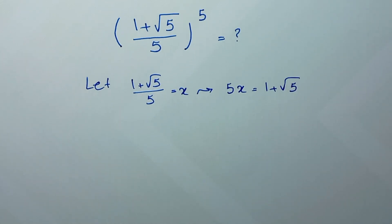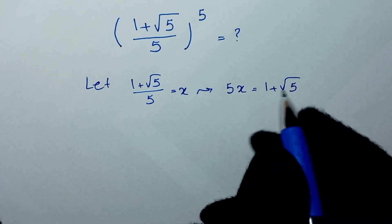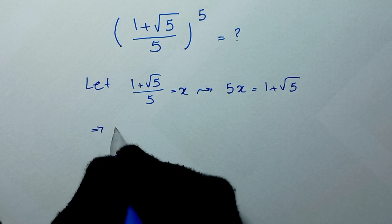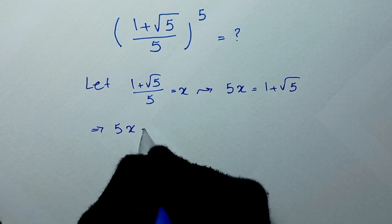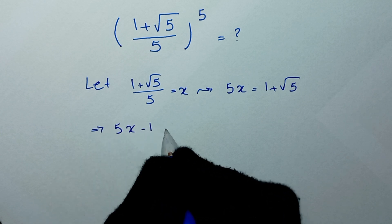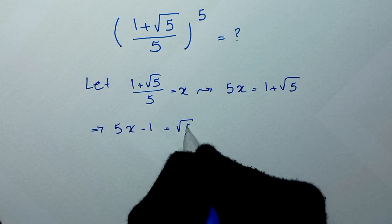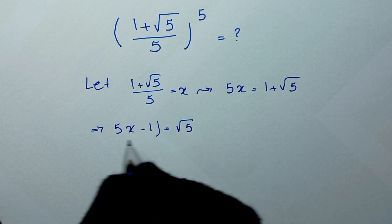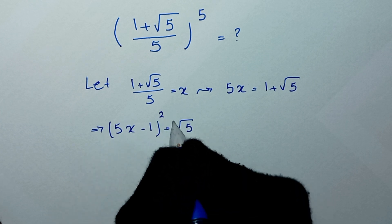In the next step, we take the 1 to the other side and it will be 5x minus 1 is equal to square root of 5. Then we square both sides of this equation.